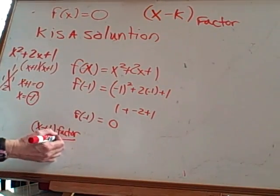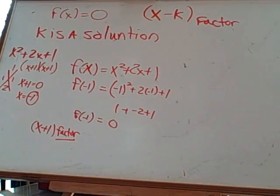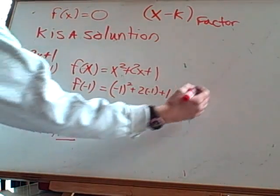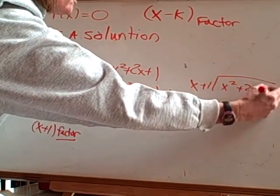And what that says is if I try to divide x plus 1 into this, I'm not going to have a remainder. So let's do that. Let's try to put x plus 1 into x squared plus 2x plus 1.